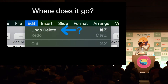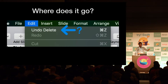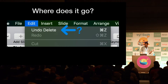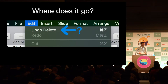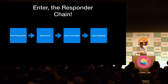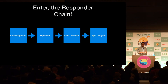So when a user taps on this menu bar item, where does the message go? What part of the code is executed? How do you know? How can you find out? For the answer to all our questions, we need the responder chain.